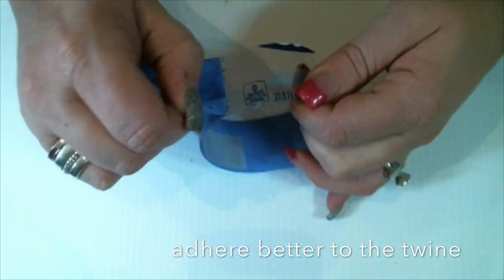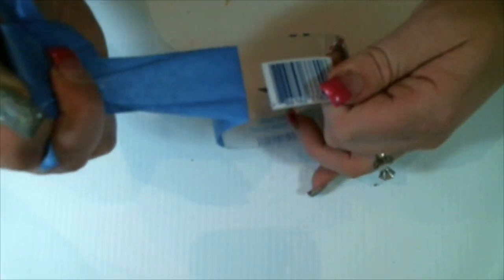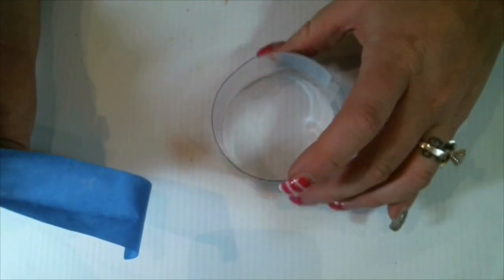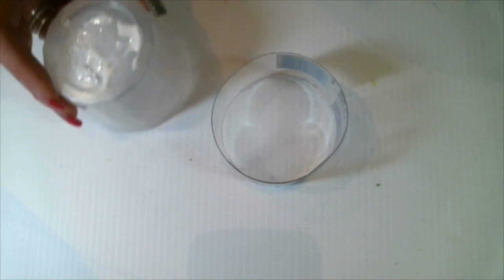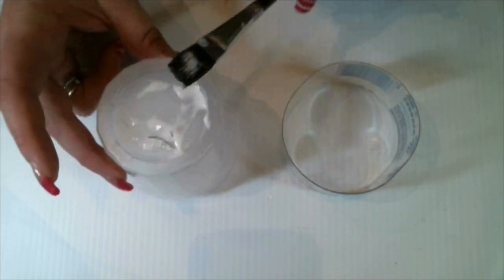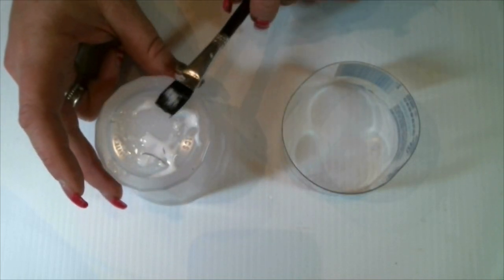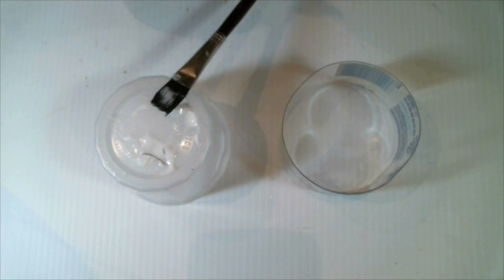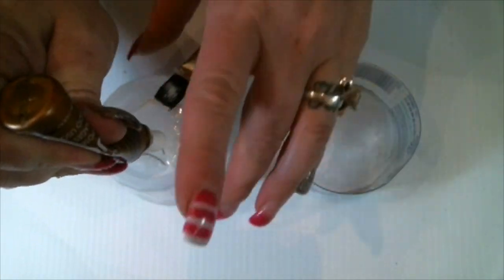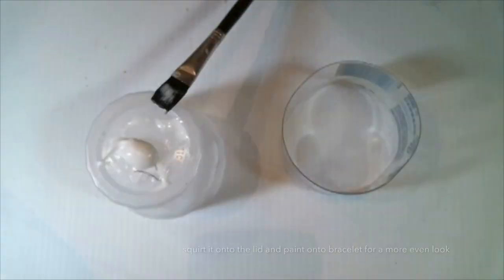Next, you are going to want to take a piece of plastic or something to put your glue onto. Here I just have a lid of a cup that I cut out just to put the glue on. Now you can squeeze it onto the bracelet, but I prefer to squirt it onto the surface that you will be using to paint because it is so thick.